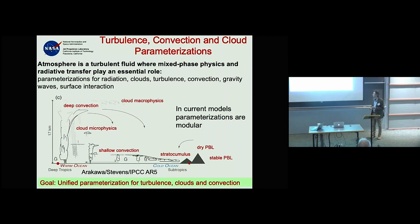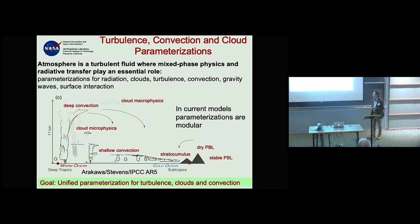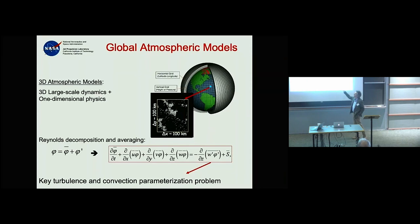What do we mean by parameterization of turbulence and convection? You can summarize it simply: you need to do averaging because the physics happens at very small scales.